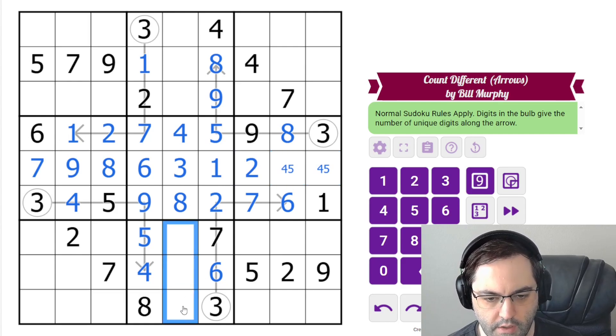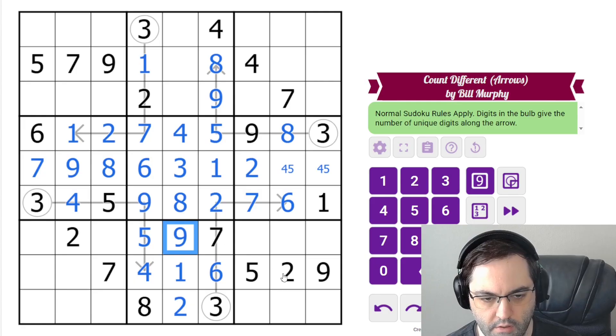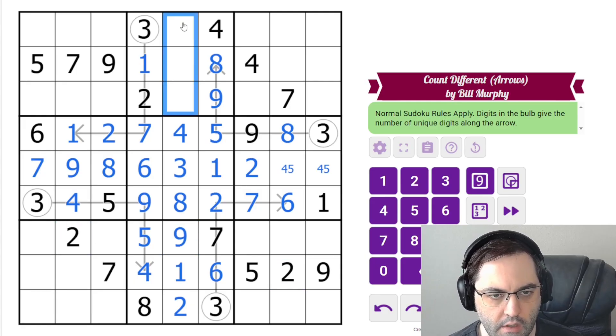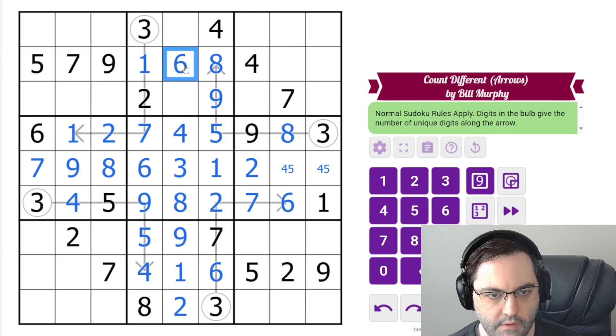These are one, two, nine. Two's got to go there. And up here we have five, six, seven. That's got to be the six, five, seven.